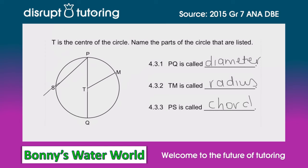If this line was extended on either side it would be called a secant, but because it is ending at the circumference it means that this line is called a chord. Right guys, hopefully that helps you with some of the names associated with circles. They always come up in your test so make sure you remember these — they're easy marks if you know them.